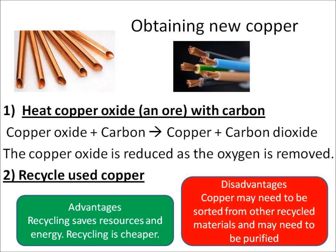The second way we can do it is simply recycling old used copper. The advantages of this are that recycling saves resources, it saves energy, and it's cheaper. However, the disadvantages are that you may need to sort the copper from all the other materials it's with, and even then, when you've got it, it may not be pure, so you may have to purify it.